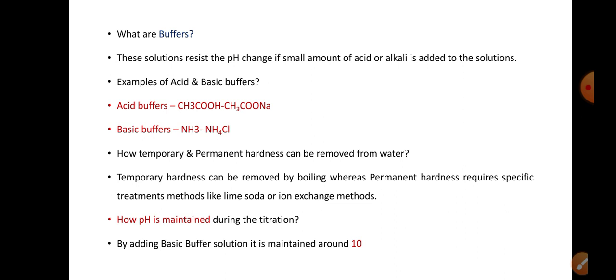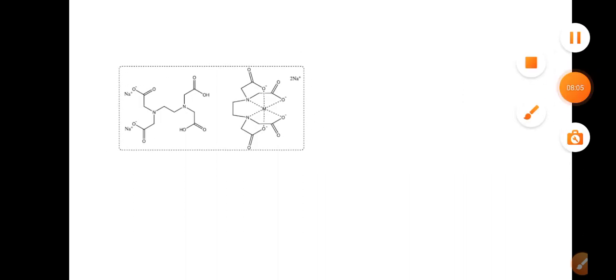How is pH maintained during the titration? This question may be asked that during the complexometric titration where you are calculating total hardness, here we are using buffer solution to maintain the pH 10. So how this pH is maintained? This pH is maintained by adding ammonia and ammonium chloride.